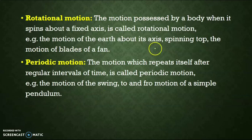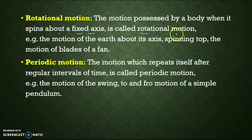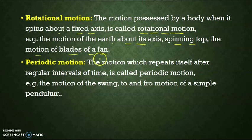Rotational motion. The motion possessed by a body when it spins about a fixed axis is called rotational motion. For example, the motion of the earth about its axis, a spinning top, and the motion of the blade of a fan are all examples of rotational motion. Here, any object moving around a particular axis is known as rotational motion.